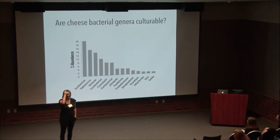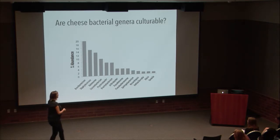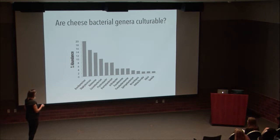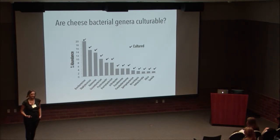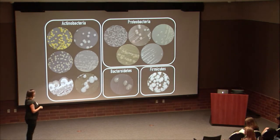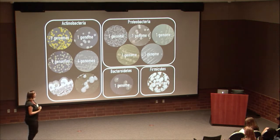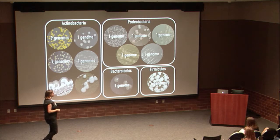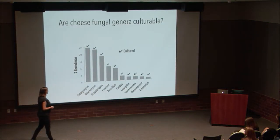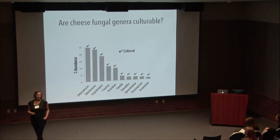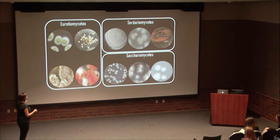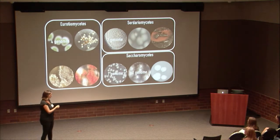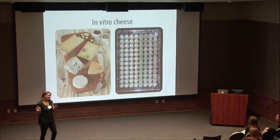We then wanted to show we could actually take the system apart. We targeted these 14 dominant bacterial genera, and it turns out we were able to culture representatives of every single one of these genera in the lab in isolation. We've now done quite a bit of genome sequencing to build up not just culture collections but genomic databases representing these organisms. The same is true for fungi—we were able to culture representatives of all fungal genera observed by sequencing.